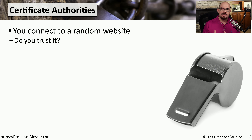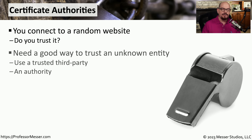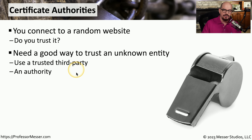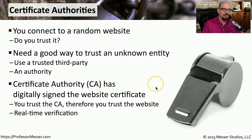The method of trust that's built into all of our browsers is one that allows us to understand if we're connecting to a website that can be trusted or not trusted. When you're connecting to a website for the very first time, we'll use a trusted third party — an authority of sorts called a certificate authority. The certificate authority digitally signs the certificates that are stored on that website, and your browser trusts the certificate authority.